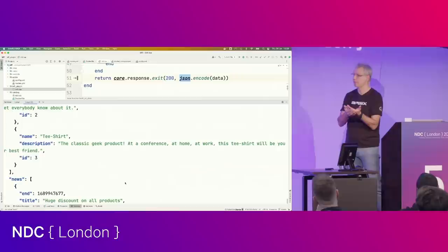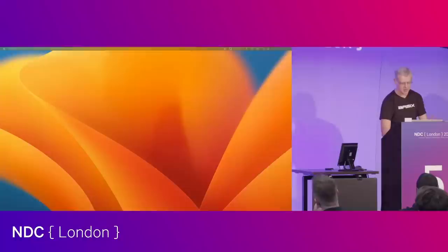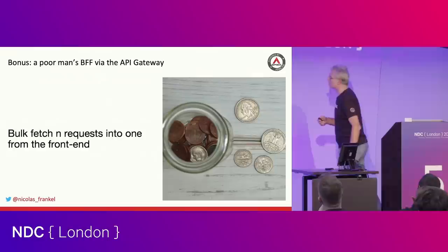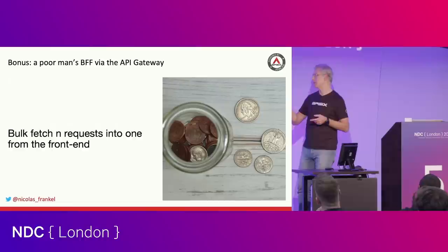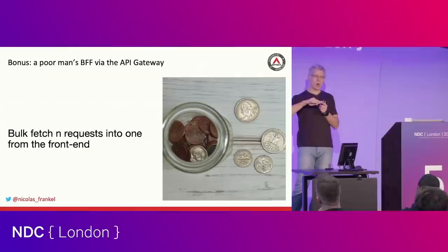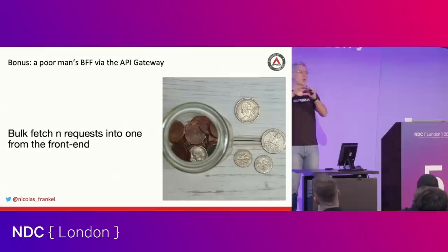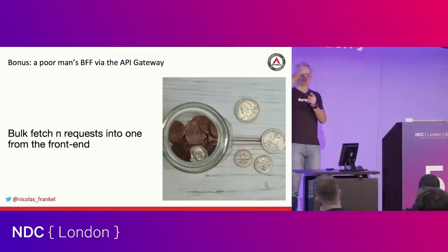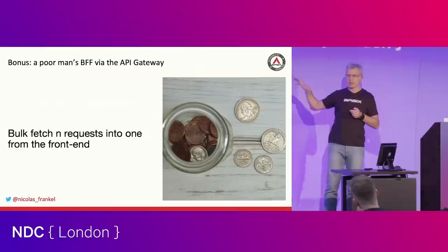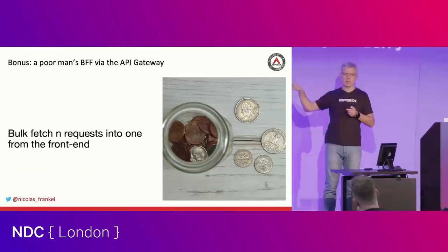Every team can have their own plugin that they deploy independently. If you have an API gateway and don't want to code any Lua, you can do a bulk fetch: one request from the front-end to the API gateway, no custom code, and on the API gateway you configure something generic that does all the calls and returns all the data. So we're back to square one but with a single call — it's quick and dirty, you get some benefits, not all of them, but it still works.